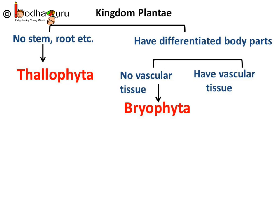If not, then next we look at whether the differentiated body part has special tissues for the transport of water and other substances within it or not. If this is not present, then it belongs to the division Bryophyta, like moss. So, we can say Bryophytes do not have any vascular tissues.